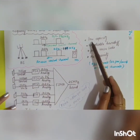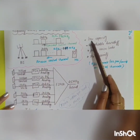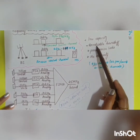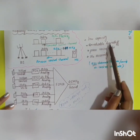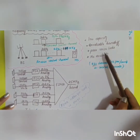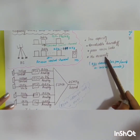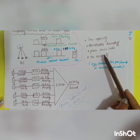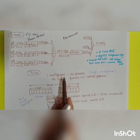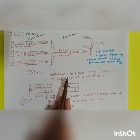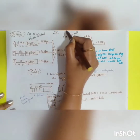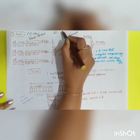Some disadvantages of AMPS include low capacity, unreliable handoff, poor voice links, and no security. Moving on to the second generation — 2G systems.